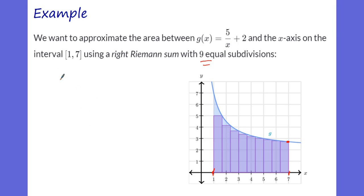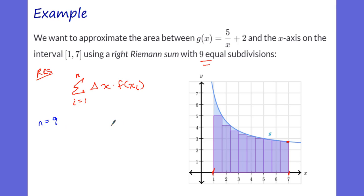What does it look like in summation notation? Using a right Riemann sum, the summation runs from i equals 1 to n of delta x times f(xi). Our n is 9. Delta x equals b minus a over n, which is 7 minus 1 over 9 — that gives us 6/9, or 2/3. That width of 2/3 is our delta x.